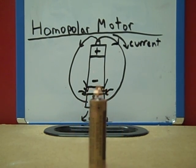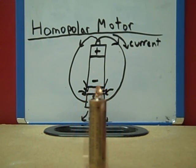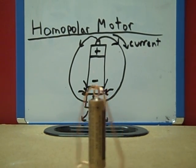You see, a homopolar motor has a magnetic field along the axis of rotation and an electric current that, at some point, is not parallel to the magnetic field. Therefore, a force occurs that is perpendicular to both the current and the magnetic field, and the wire rotates.